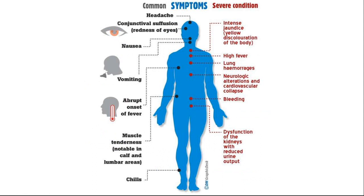Here are the overall symptoms common to both types — spirillary and streptobacillary rat bite fever. These shared symptoms are: headache, conjunctivitis or redness of the eye, nausea, vomiting, abrupt onset of fever, muscle fatigue, and chills.